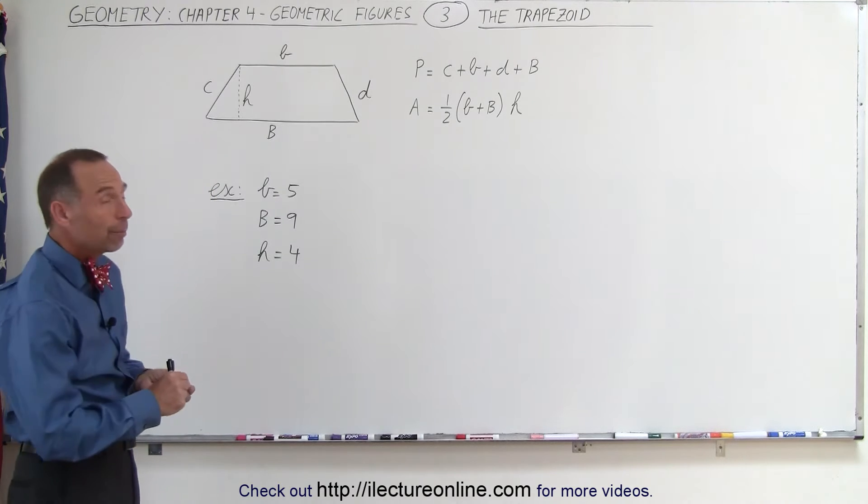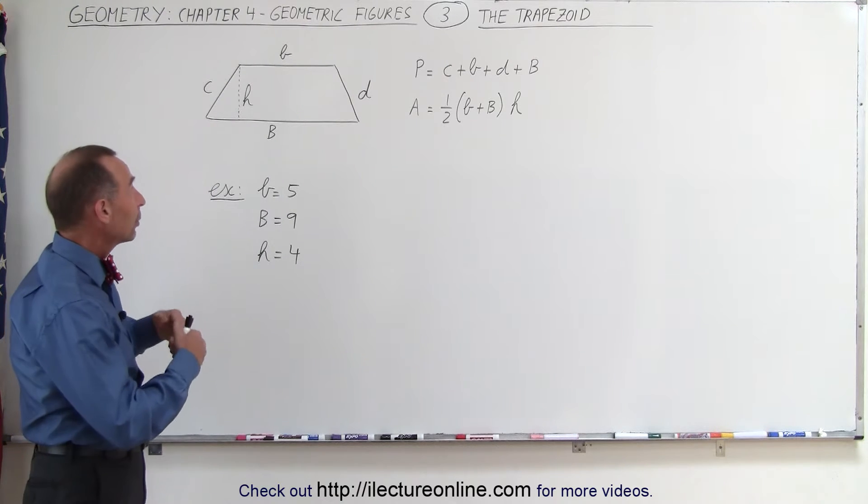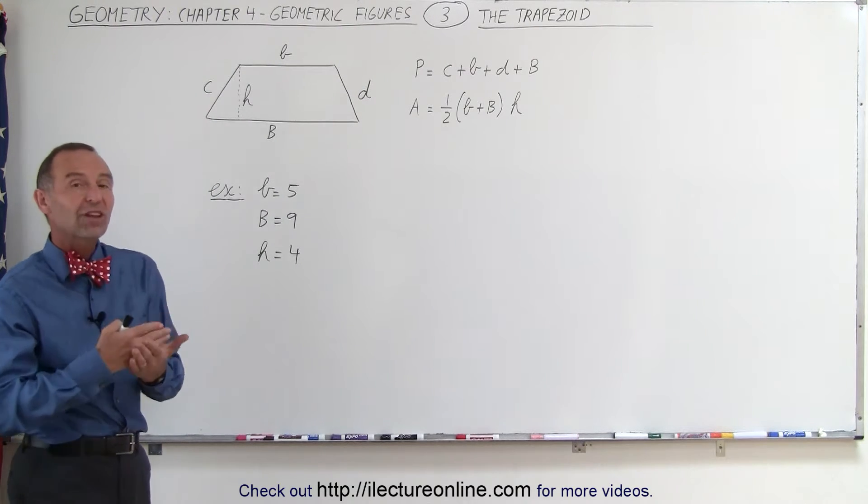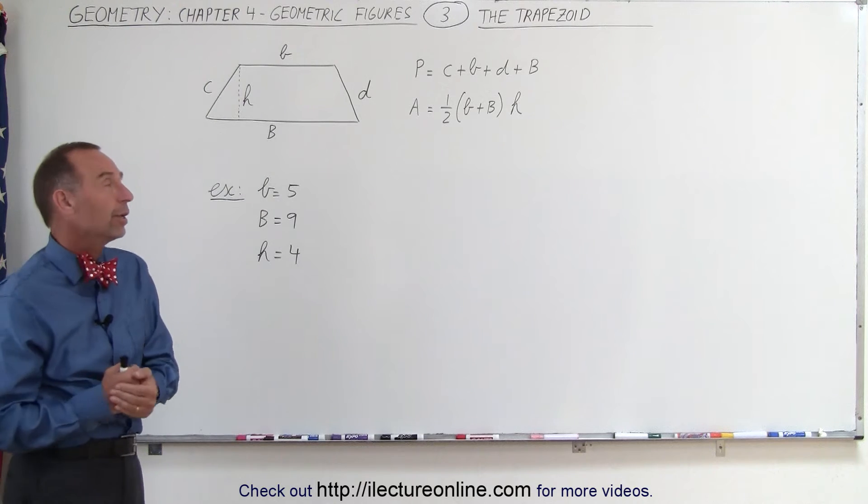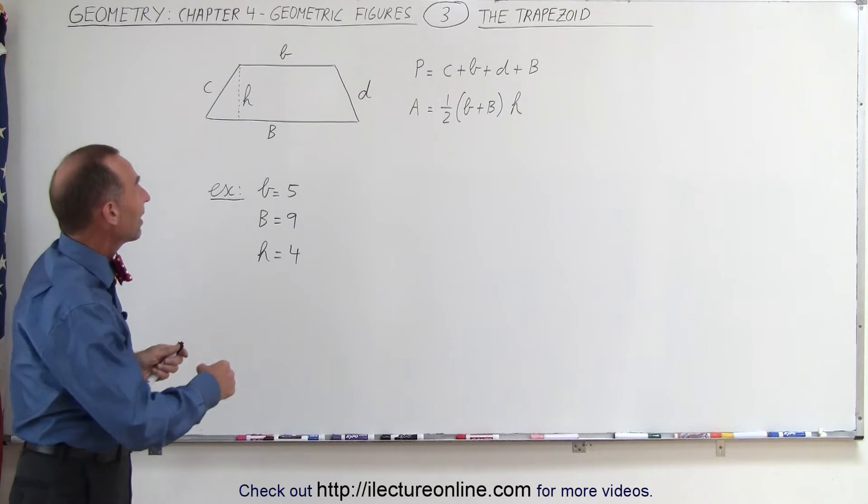The difference between the trapezoid and the parallelogram is that with the parallelogram we have two sets of opposite sides that are parallel to one another. In the case of the trapezoid, there's only one set.